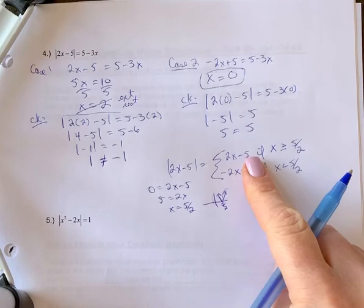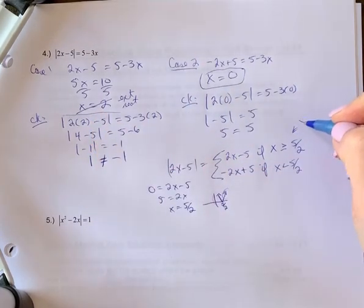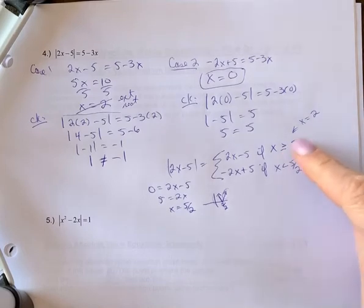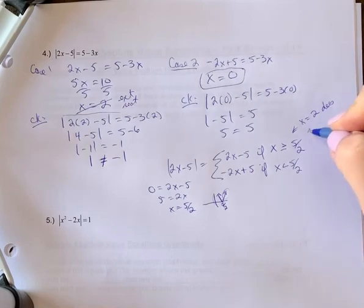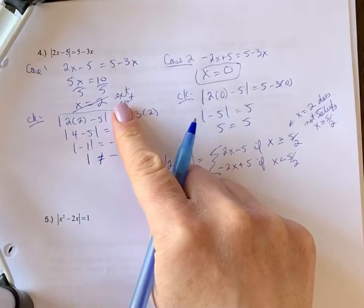So in case 1, we have x equals 2. As you look here, for x equals 2, 2 is not greater than 2 and a half. So it does not satisfy this condition. So it does not satisfy x is greater than or equal to 5 over 2. So that supports your extraneous root.